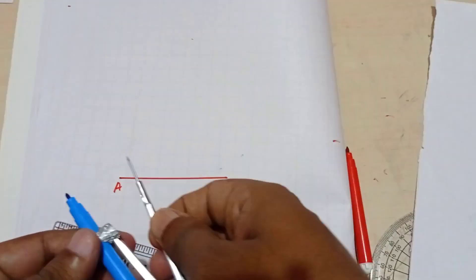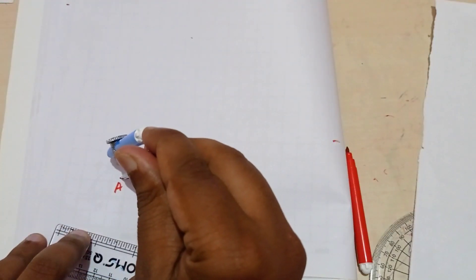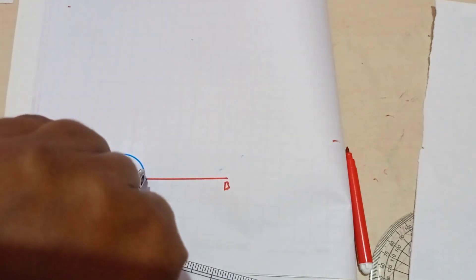Take compass and measure any length. Suitable radius you can measure it. Draw a semicircle.